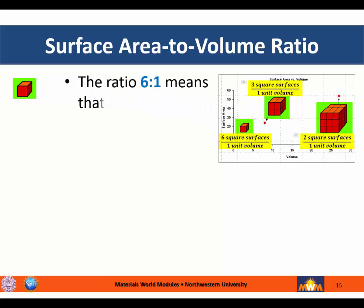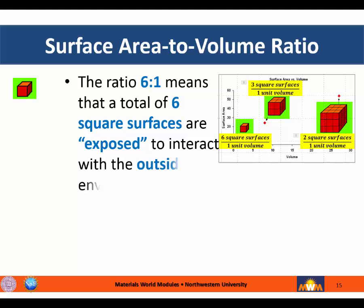The ratio of 6 to 1 for the smallest cube means that a total of six square surfaces are exposed to interact with the outside environment for every unit of cube volume.